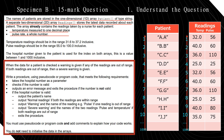When the data for a patient is checked, a warning is given if any of the readings are out of range. If both readings are out of range, then a severe warning is given. Write a procedure using pseudocode or program code that: takes the hospital number as a parameter; checks if the hospital number is valid; outputs an error message and exits if the number is not valid; if valid, outputs the patient's name; outputs normal readings if both temperature and pulse are within range; outputs a warning and the name of the reading if one is out of range; outputs a severe warning with both reading names if both are out of range.